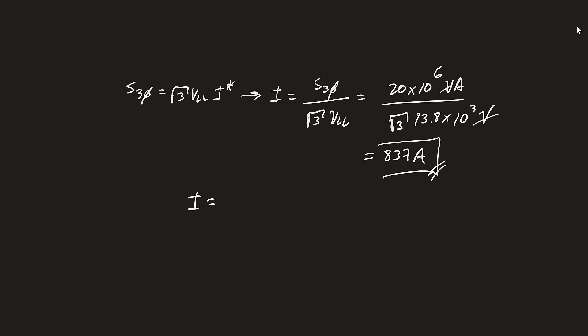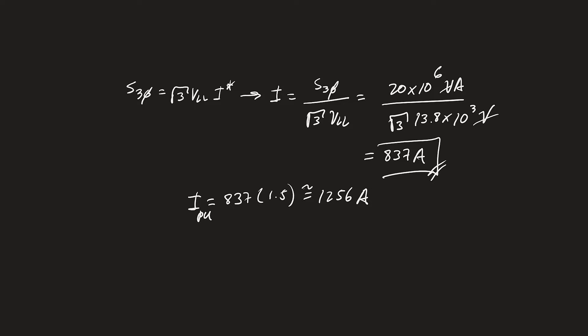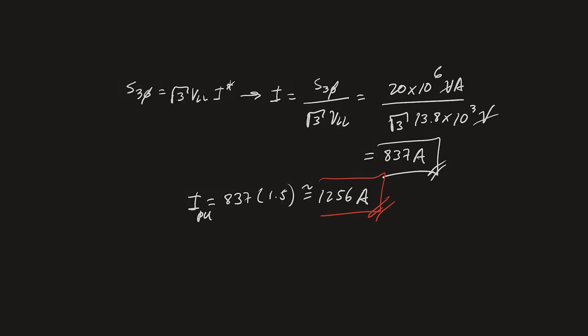So our pickup, which I'll call I_pu, is 837 × 1.5, which gives us roughly 1256 amps. This is going to be our pickup — shown here in red. Now the other thing we need to be mindful of is that although this setting ensures that we don't trip for load conditions, it does not mean that it's sensitive enough to pick up any fault in the feeder.